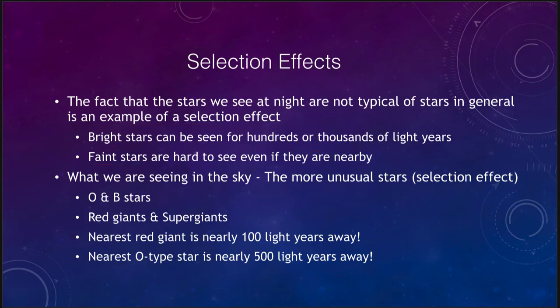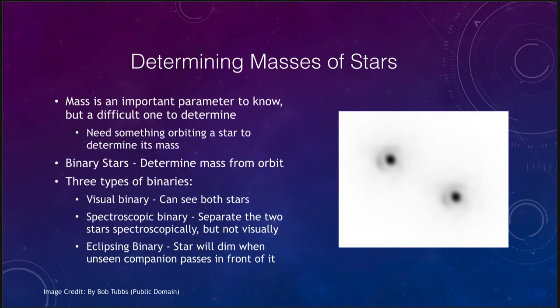Now let's look at how we can go about determining masses of stars. It's important to know but can be hard to determine. In order to determine the mass of an object we need an orbit, something orbiting it. We can do that for binary stars. Probably half the stars in the universe are part of binary systems, which is great for determining orbits. We need to be able to measure the properties of the orbit.